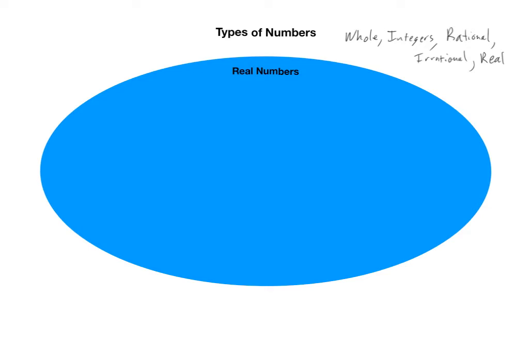This set is split in two — not evenly, but it is split in two. Each real number is either a rational number or an irrational number. No real number is both, and no real number is anything else — strictly rational or irrational. Rational numbers are decimal expansions that either stop or have an infinite repeating pattern. Irrational numbers are infinite decimal expansions with no repeating pattern whatsoever.